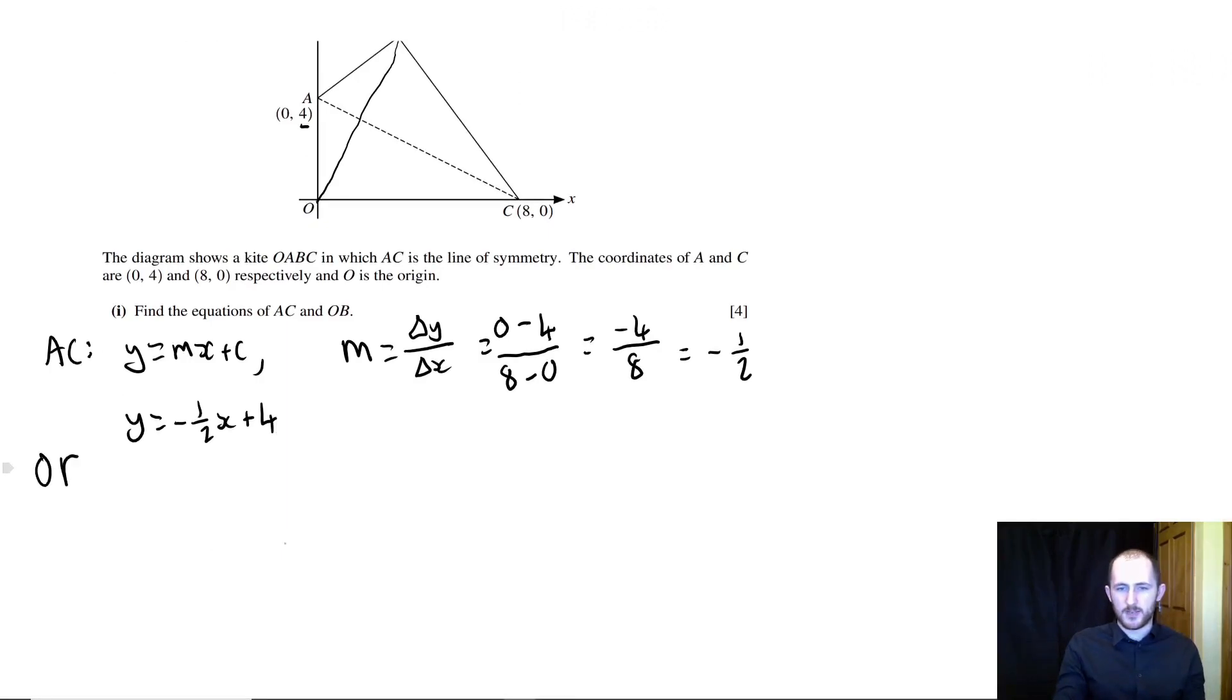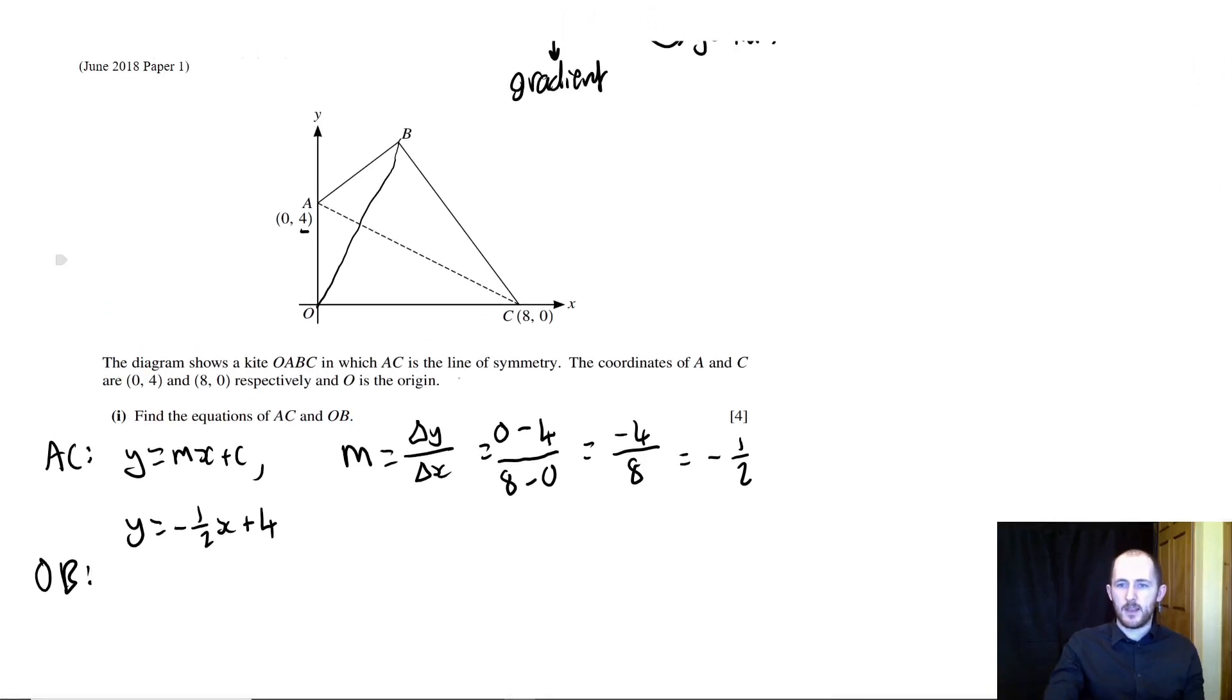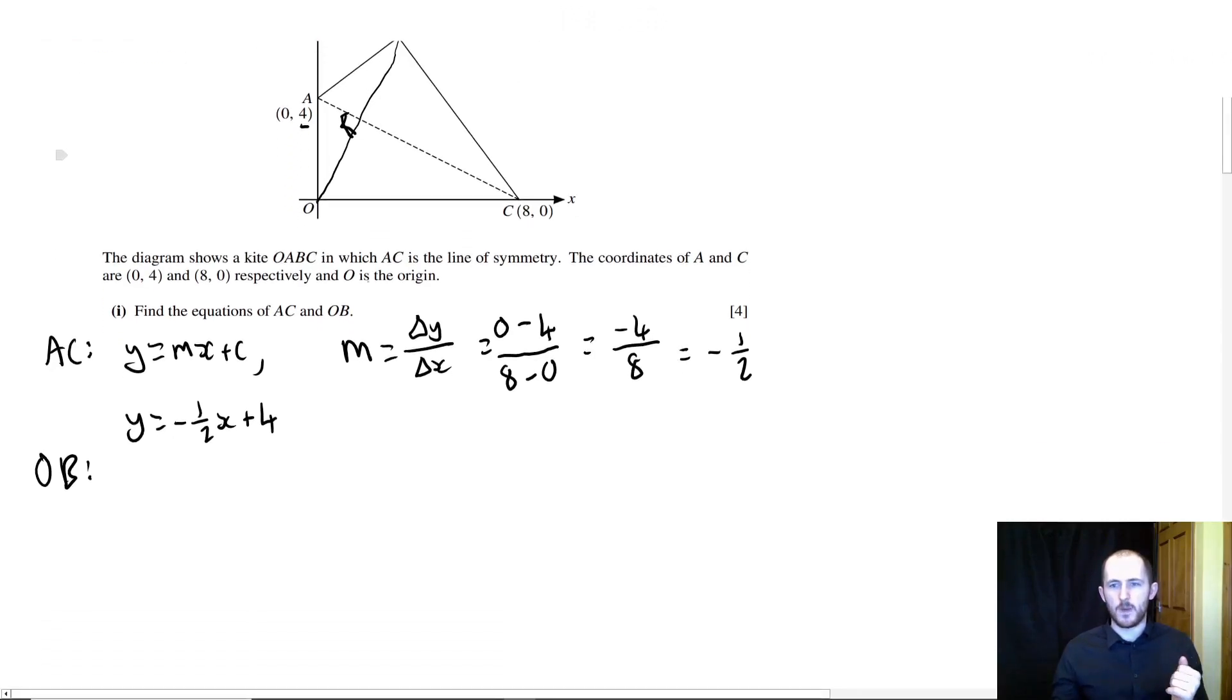So now we have to look at OB, which is where things get slightly more challenging, but not too bad. First thing to note is that because this whole thing, the kite, is symmetrical, this is at right angles with line AC. So OB is perpendicular to AC.